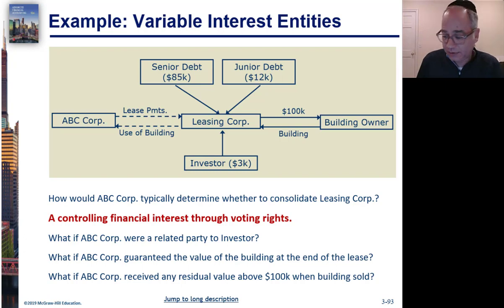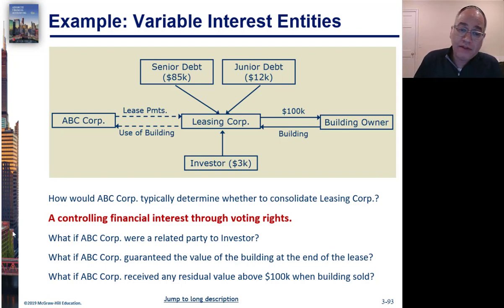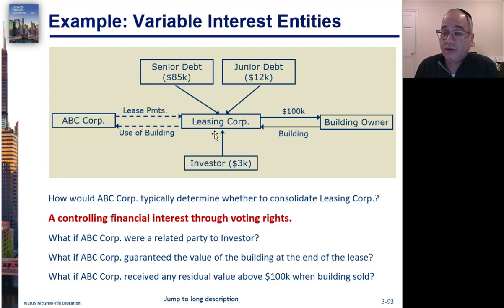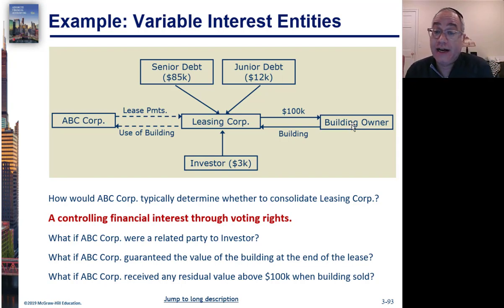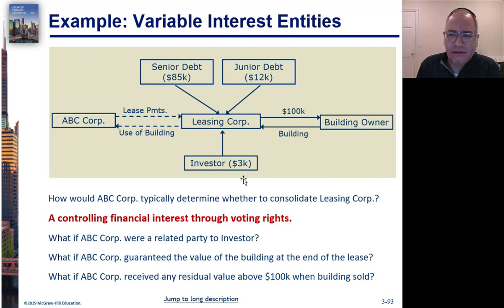Here's a similar example from the book involving a sale-leaseback. ABC company is going to do a transaction with an SPE called Leasing Corp. The owner of a building sells it to Leasing Corp for $100,000. Leasing Corp raised that money through $85,000 in senior debt, $12,000 in junior debt, and a tiny investor who put in just $3,000. ABC Corp then gets to use the building in exchange for lease payments.